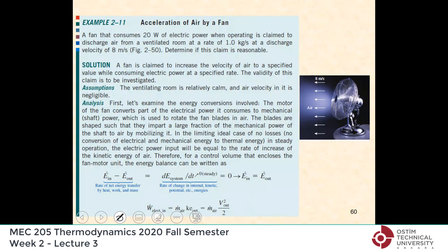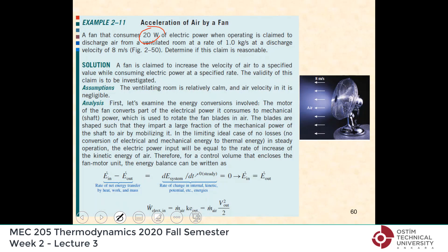Let's look at a different kind of problem. We have a fan that consumes 20 watts of power when running. It discharges air at a rate of 1 kilogram per second, and it is claimed that the average velocity of the air is 8 meters per second. The question is: is this claim reasonable? Does it satisfy the First Law of Thermodynamics?